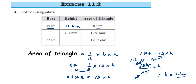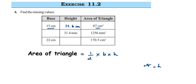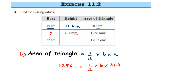For the second question, the formula remains the same. Base is missing; height is given as 31.4 and area is 1256. Substituting: 1256 = ½ × b × 31.4. We can cancel 2 into 31.4 — since 31.4 is even — giving 15.7, so: 1256 = b × 15.7.